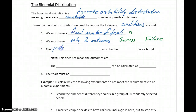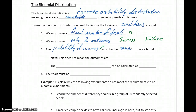The probability of success, which is usually represented with a P, must be the same in each trial. Now, keep in mind, this doesn't mean that the outcomes are equally likely. So we have two outcomes — it doesn't mean the probability of each one occurring is 50-50. It just means that in each trial, each of those outcomes have the same probability of success. So we're not changing that from trial to trial.